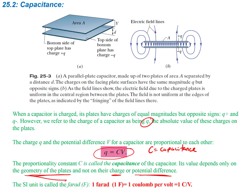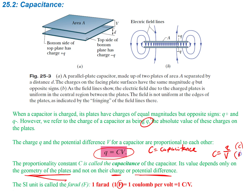The SI unit is called the farad, and we're going to use capital F as the unit for that, and that's equal to 1 coulomb per volt. If you take this equation and rearrange it for C, you see that a farad is going to be charge in coulombs divided by the potential in volts.